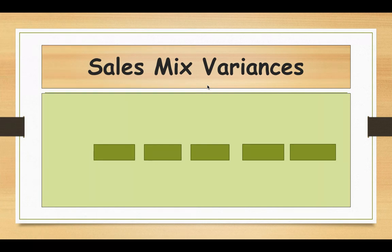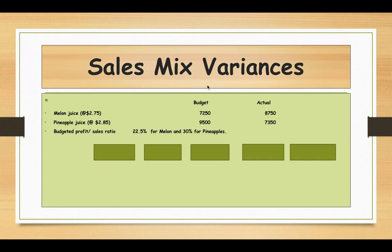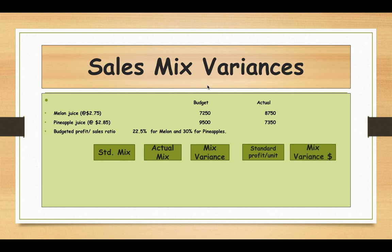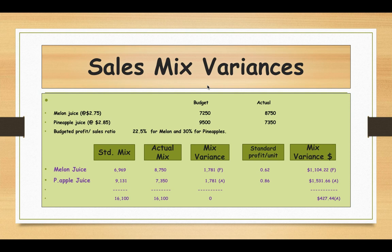Now we calculate the sales mix variance, similar to the material mix variance from part 5. We need to calculate the standard mix and compare it with actual units sold to get the mix variance in units, then multiply by standard profit per unit. In total, 16,100 units were sold (melon 8,750 + pineapple 7,350). The total budgeted units are 16,750 (7,250 + 9,500).